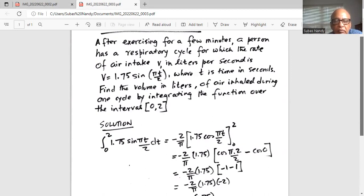This is a problem on definite integral. So when we integrate sine pi t over 2, we get negative cosine pi t over 2 plus, since the coefficient of t is pi over 2, the inverse of that 2 over pi comes outside. Okay, that's part of the integration.